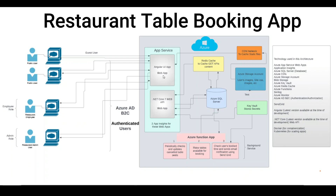At a high level, let me explain what this app does. Consider a website where you go and search for a restaurant. Once you find a particular restaurant, it shows all the branches it has. You pick a branch based on your area, select a date, and book a table for lunch, breakfast, or dinner. Behind the scenes, it books a table for a particular user, and when the time comes the user starts receiving notifications.